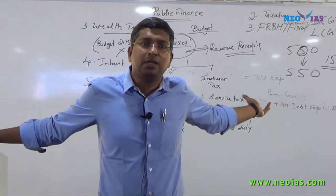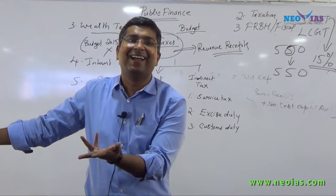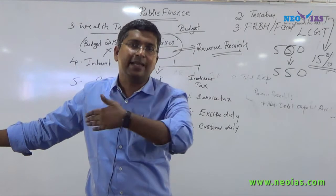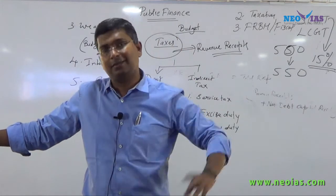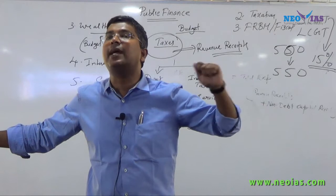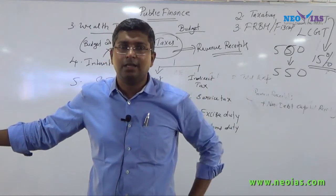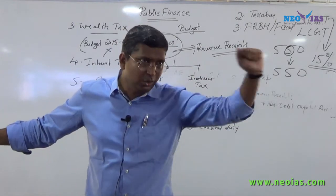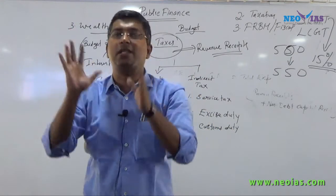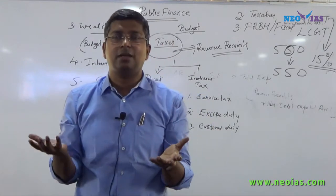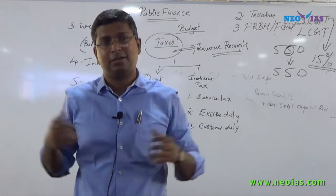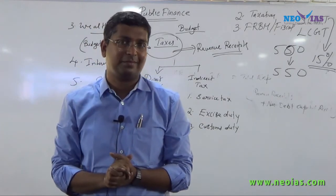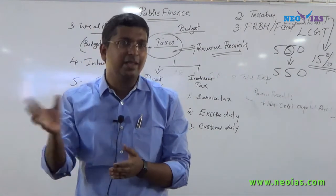All the major taxes have been given to the centre. Except sales tax, all the taxes have been given to the centre by the constitution itself, by putting these items in the union list. If you see the union list, all these items are there. These taxes belong to the union government. In the state list, only sales tax and small minor taxes will be there.